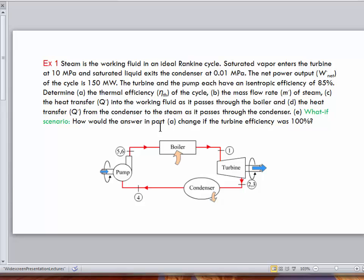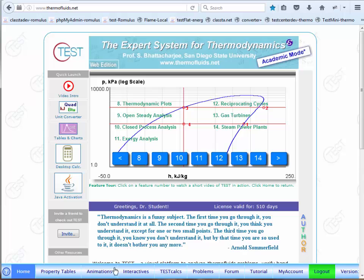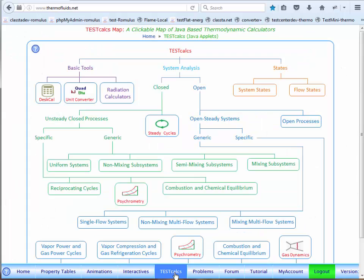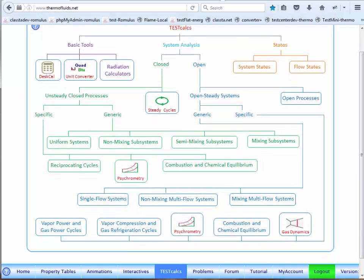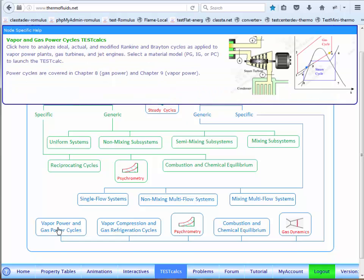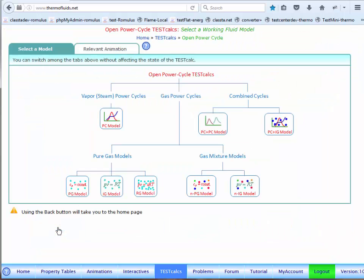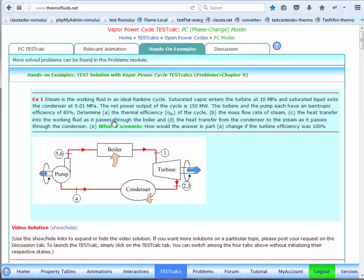So let us go and launch the TESTcalc first. I've already logged into the thermofluids.website. We go to the TESTcalcs tab. In the TESTcalc trees, we follow the open steady path, specific branch. That's where the vapor power and gas power cycles are located. Based on the material model we choose, in this case, obviously PC model, steam is a phase change fluid.